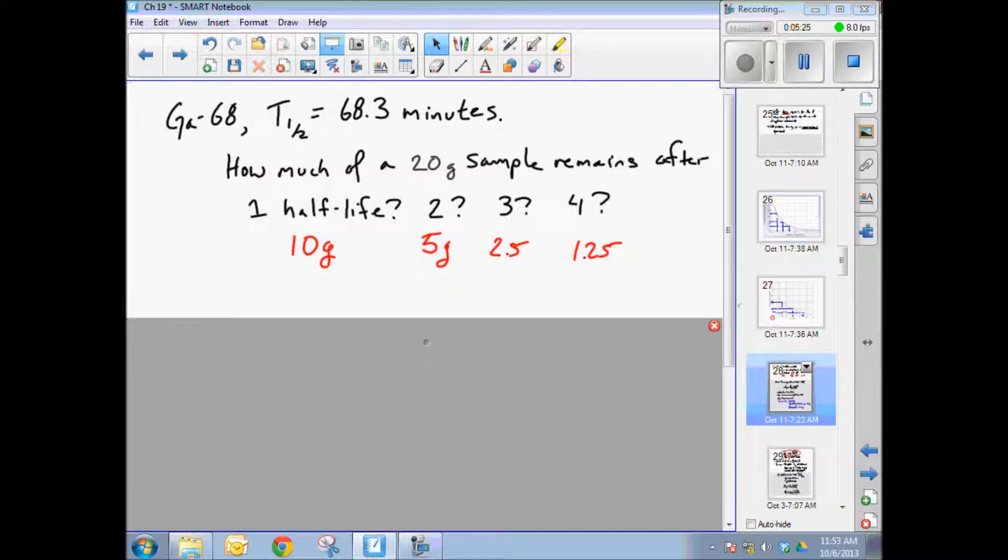So what we're doing mathematically then is we're taking an original amount, let's just call that original amount n sub-zero, or the number at time zero, the number of radioisotopic atoms, or in this case, the number of grams, 20. And we're multiplying by one half x number of times, and that x is equal to the number of half-lives.